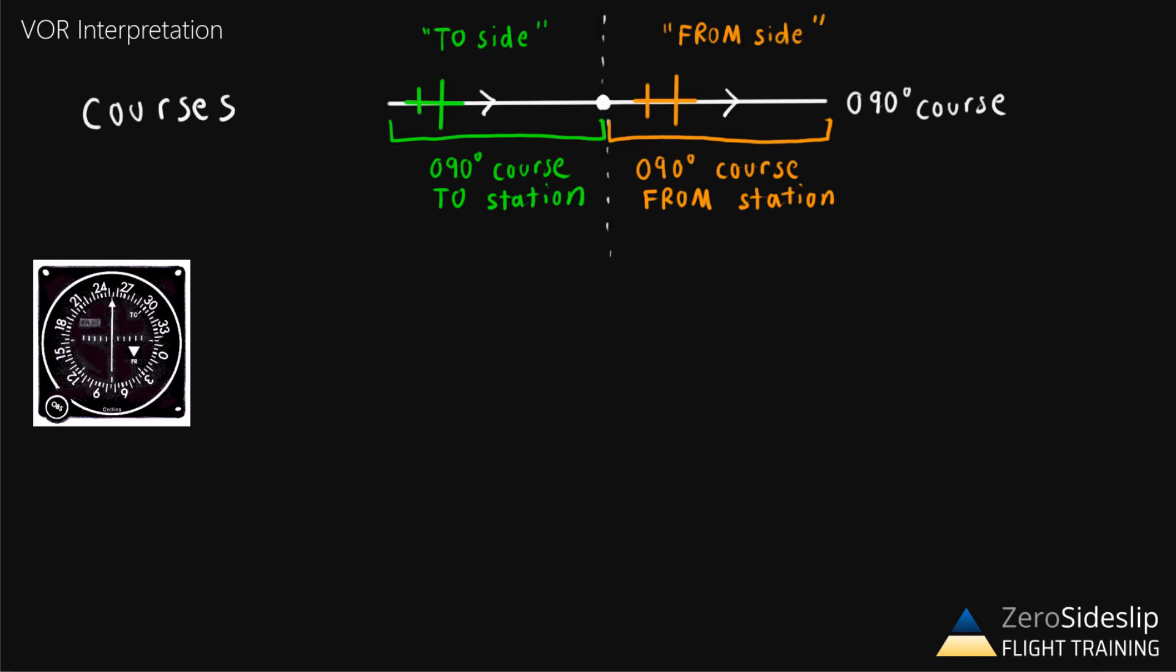Now for some basic components of the VOR indicator. On the lower left we have the OBS knob, which stands for Omni Bearing Selector. We can twist this knob in order to select a particular course. In this scenario, it looks like the selected course is going to be about 254 degrees. Next we have the to from indicator, and this will tell you whether you're on the to side of the VOR or the from side of the VOR.